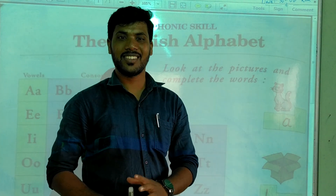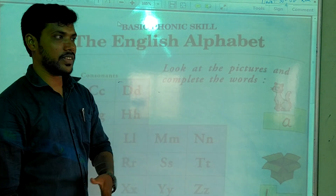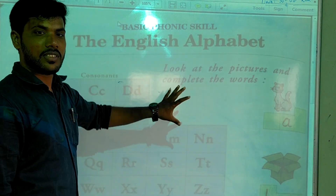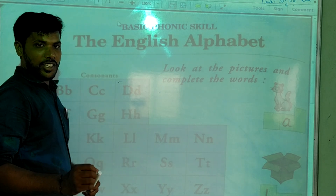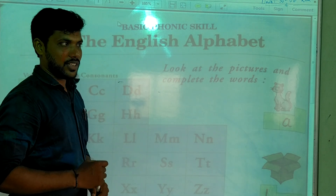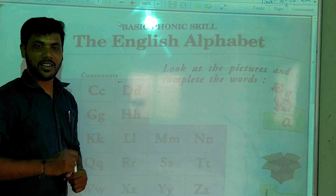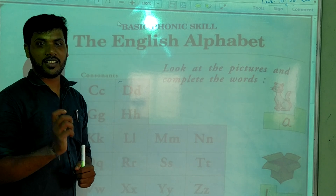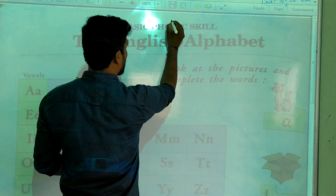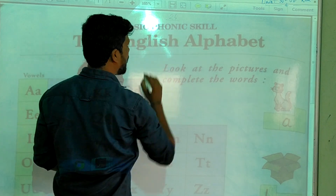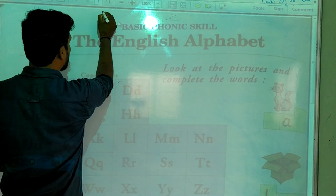So today we will start our class with the alphabetic skills. So in English, first I want to ask you one question. In English, how many letters are there? So there are 26 letters. How many letters? 26 letters.